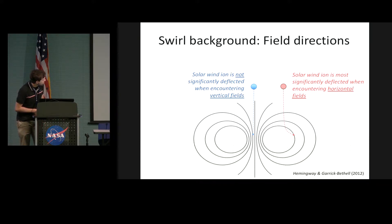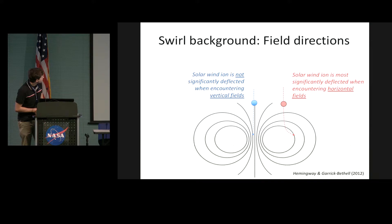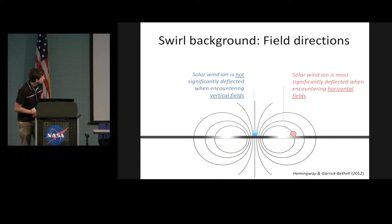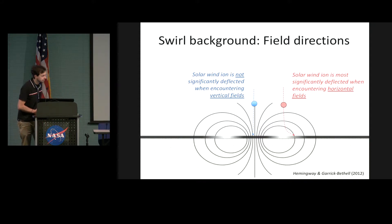Here's a model showing that the direction of the magnetic field is important in controlling what's happening at swirls. At swirls, the solar wind gets in where you have vertical magnetic fields, and is deflected away where you have horizontal fields. Horizontal fields are a key part of understanding how swirls form. Bright areas show up where there's deflection of protons under the horizontal field — so horizontal fields equal bright spots and vertical fields equal dark spots. That's the hypothesis.